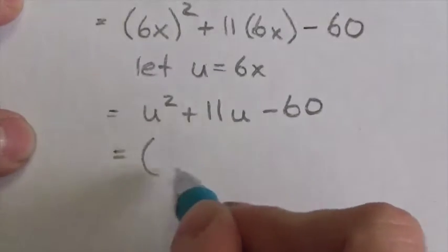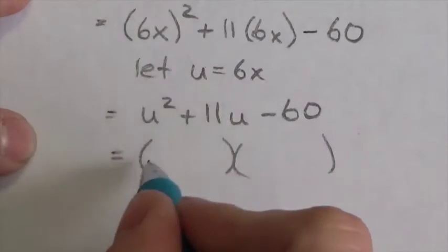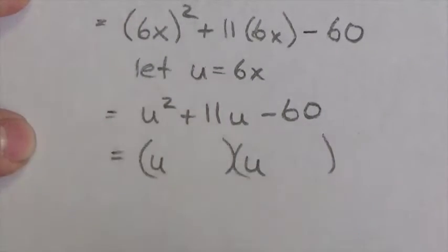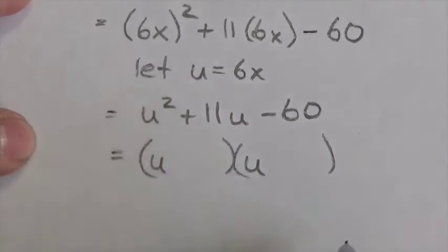Because there's no leading coefficient here now. So now I'm going to simply break this apart. To get a u squared, this would be u, this would be u. And now I'm looking for factors of negative 60 whose sum is 11.